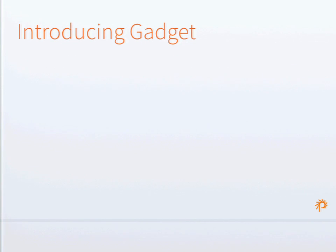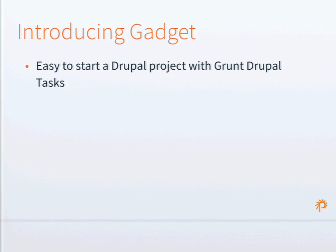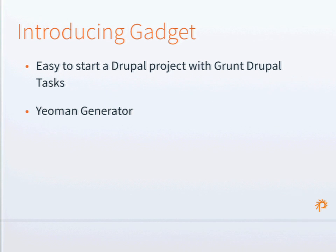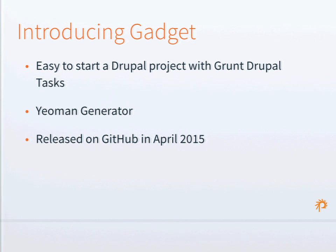The other open source project I'm going to introduce is Gadget — simply an easy way to start a Drupal project using Grunt Drupal Tasks. It's a Yeoman generator, part of the Grunt/Yeoman/Bower universe, and it's about setting up a project skeleton. You use it once to set up a project, and then from then on you just use Grunt.